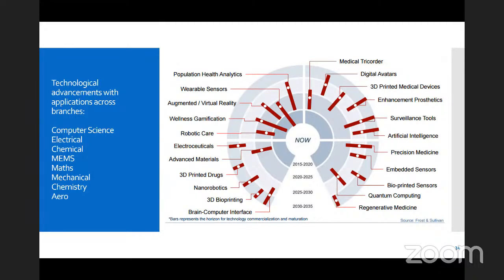This slide summarizes technological advancements expected in healthcare. There are concentric circles, each covering about five years from 2015 to 2035, with red bars indicating when particular applications are likely to be commercialized. Brain-computer interface: our brain activity will be measured to the extent we can communicate without speech, or control devices just by thinking. 3D bioprinting: organs will be printed in the lab from actual live cells in case of injury or organ failure. Nanorobotics: by 2035, nanorobots sent through your bloodstream can deliver specific drugs to specific targets or be used for diagnostics.